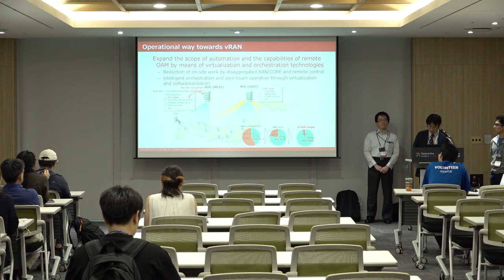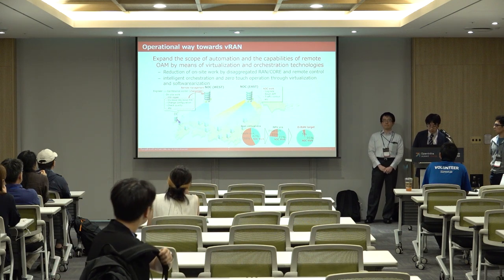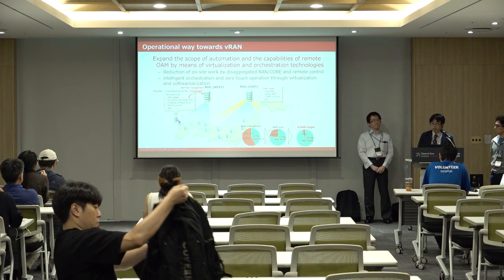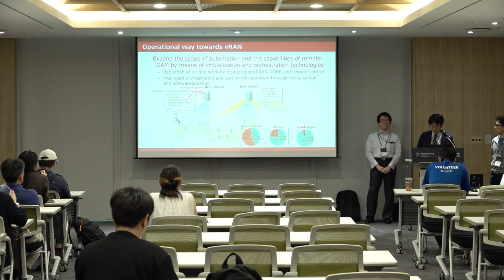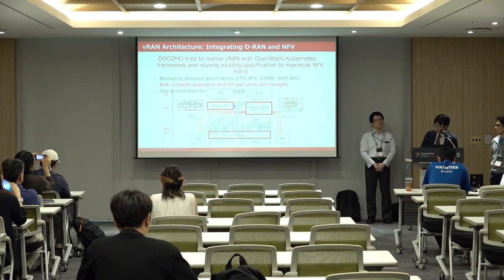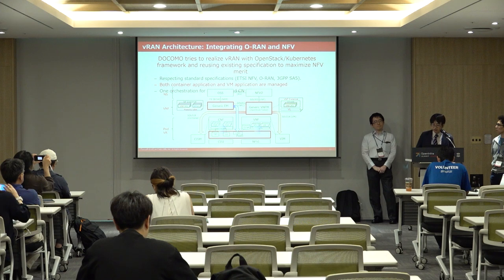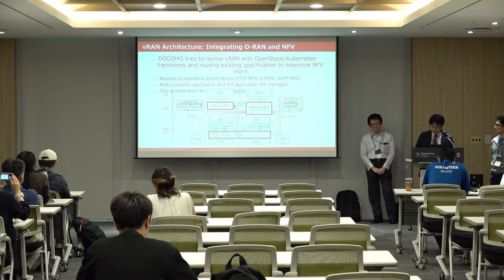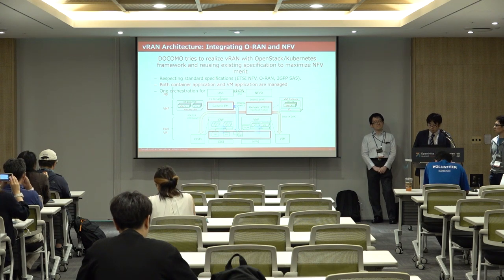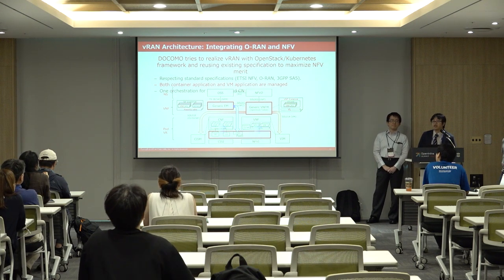But operators want to improve more onsite work, like changing configuration and checking quality from remote. Docomo's goal is to realize vRAN with OpenStack and Kubernetes framework, reusing existing specifications to maximize NFV and OpenInfra management. Operators still need to operate with both VM and container, which are key components to realize vRAN.